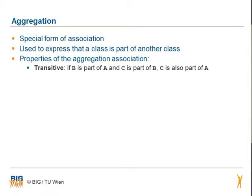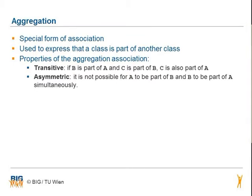Transitive means if B is part of A and C is part of B, C is also part of A. Asymmetric means that it is not possible for A to be part of B and B to be part of A simultaneously.